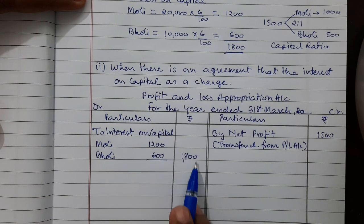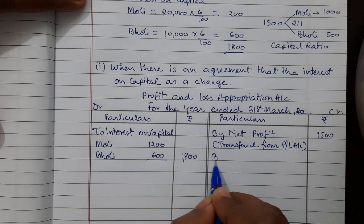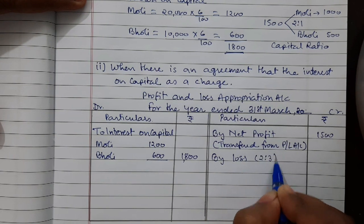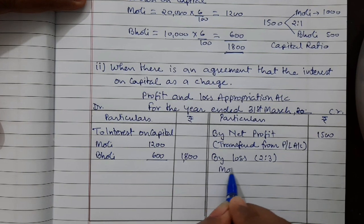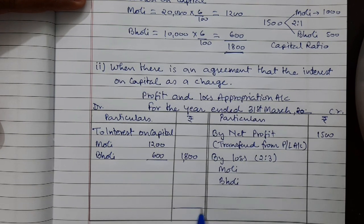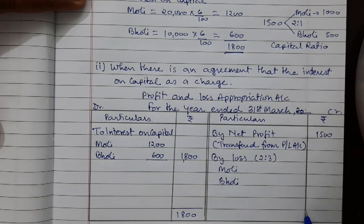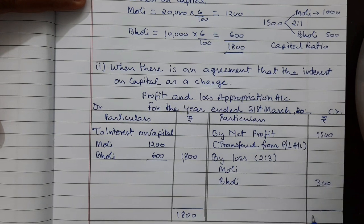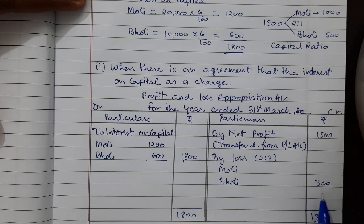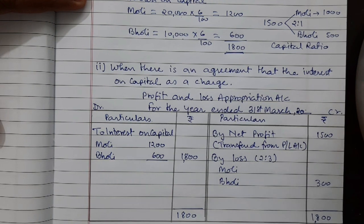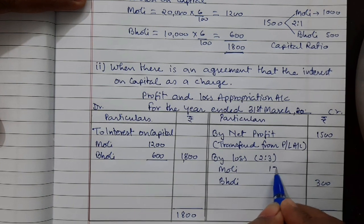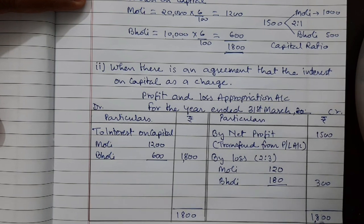The debit side (rupees 1,800 interest) is more than the credit side (rupees 1,500 net profit), so it will appear as a loss. The balancing figure is rupees 300, which is a loss to be distributed between the partners in the profit sharing ratio 2:3. So Moly bears a loss of rupees 120 and Bholi bears a loss of rupees 180.